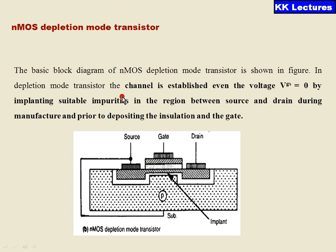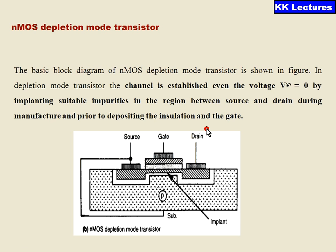In the depletion mode, as the channel already exists, we are not applying any positive voltage — we set Vgs equal to 0 to establish the channel. In the depletion mode transistor, the channel is established even when Vgs is 0 by implanting suitable impurities in the region between source and drain during manufacturing, prior to deposition of the insulation and gate. So the main difference is that the channel is generated by applying voltage in enhancement mode, whereas in depletion mode the channel is already formed during the manufacturing process.